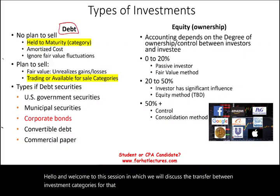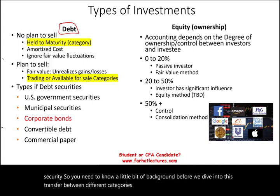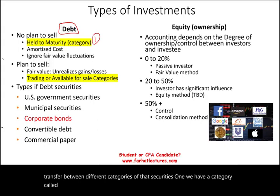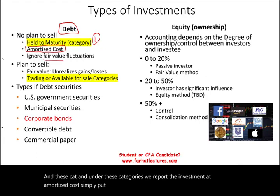What are the categories for debt securities? You need to know a little bit of background before we dive into this transfer between different categories of debt securities. First, we have a category called held to maturity. Under this category, we report the investment at amortized cost. Simply put, we ignore fair value fluctuation.